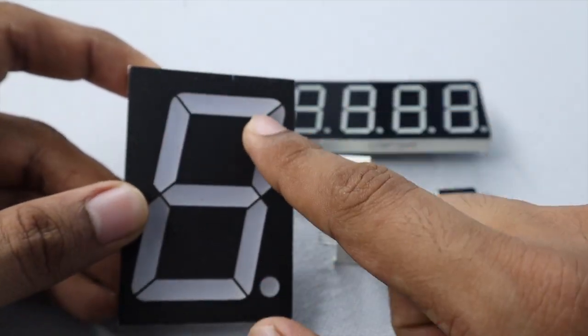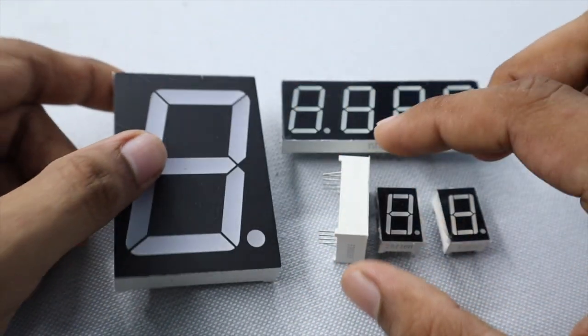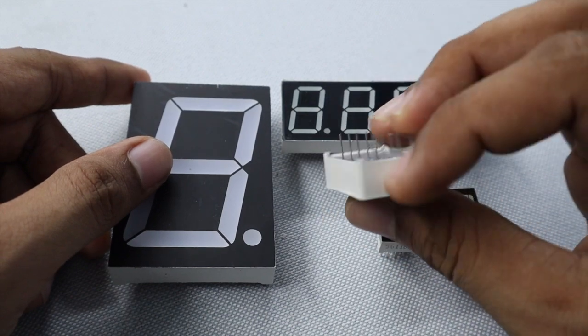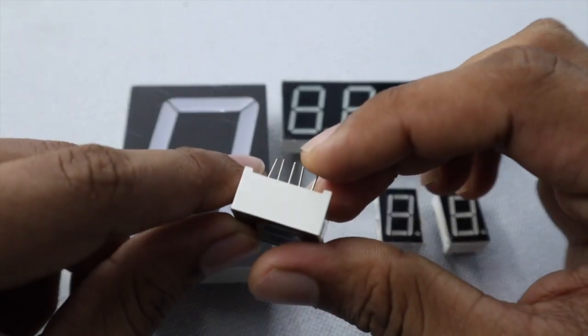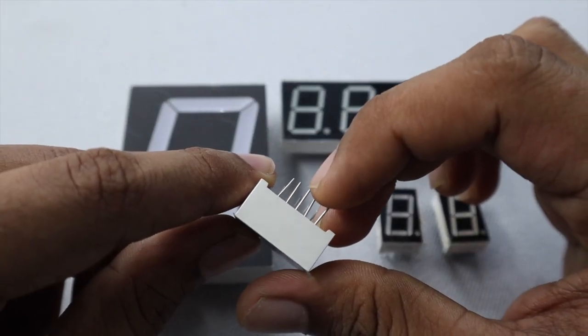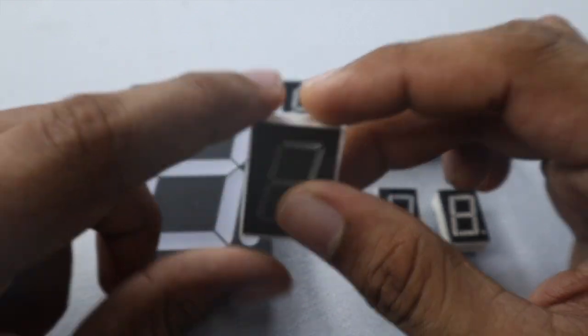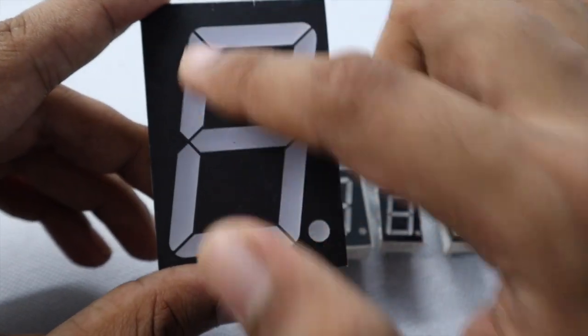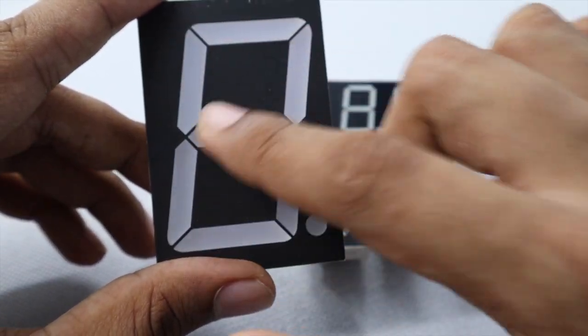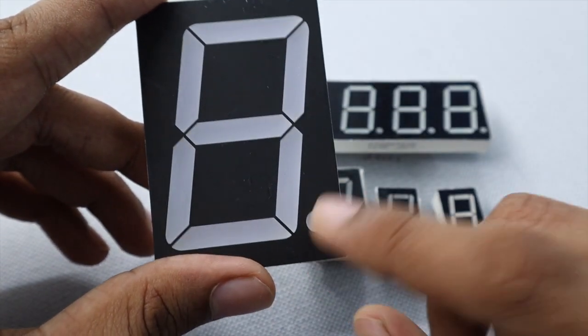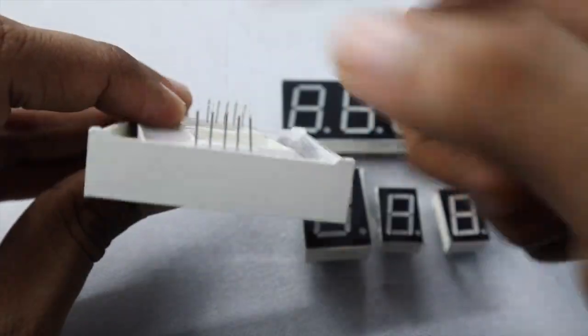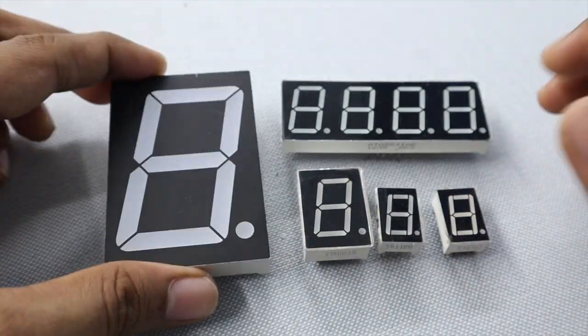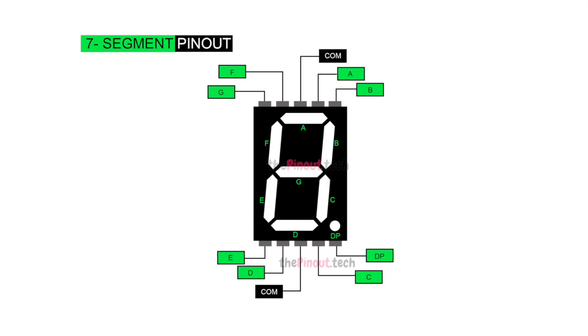In common anode, the common pin goes to positive and all other pins go to ground. There are ten pins total: seven for the segments, one for the dot, and two common pins. This is the pin diagram of the seven segment display. You can download it from my blog, the link will be in the description.